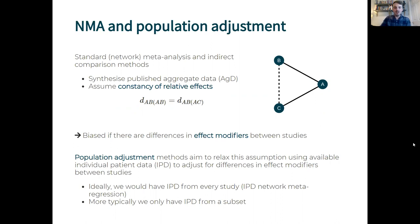Ideally we'd have IPD from every study, in which case the gold standard approach is an IPD network meta-regression, but more typically we only have IPD from a subset of studies and then aggregate data from the rest.